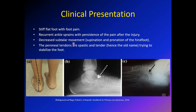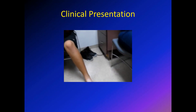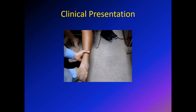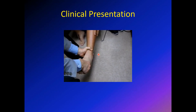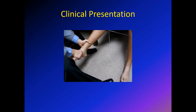On examination you will see decreased subtalar motion — a video will show that in the next slide. When you examine the peroneal tendons, on the lateral aspect of the ankle, you will find them spastic and tender. That is why the old name for this condition was peroneal spastic flat foot. The peroneal tendons are firing continuously causing pain and spasm. This video shows a patient with a subtalar coalition on the left side, with very minimal range of motion compared to the right side, which has much more range of motion for supination.